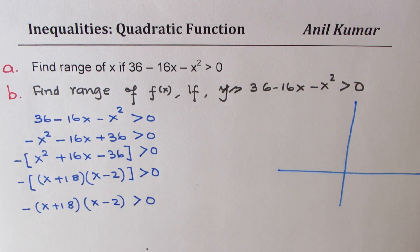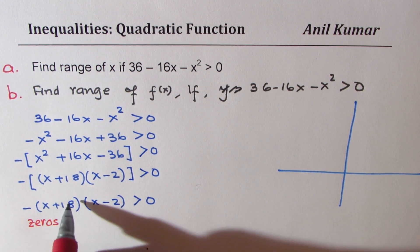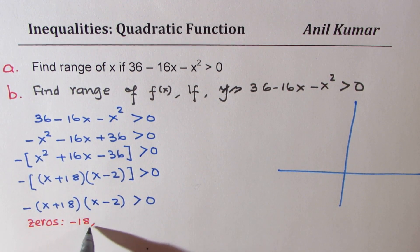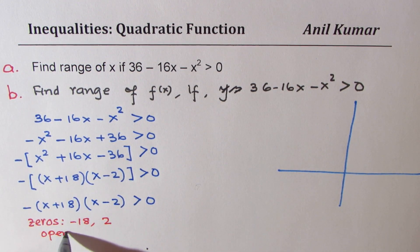Let's find the vertex also. So what we know from here is that the zeros, let me write down, zeros are at minus 18 and 2, and opens down.